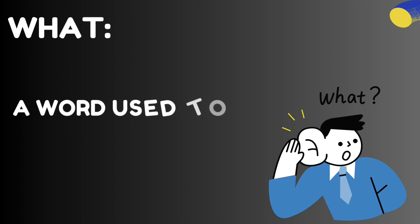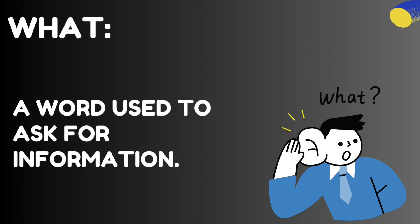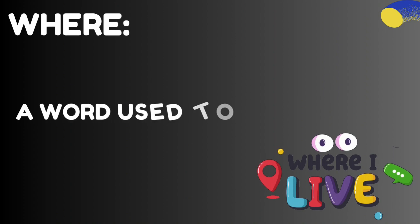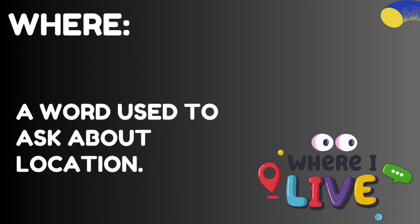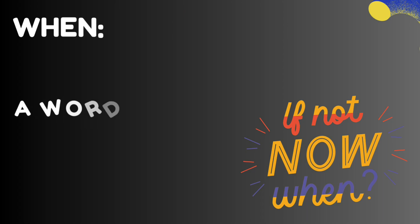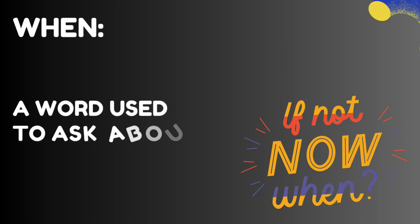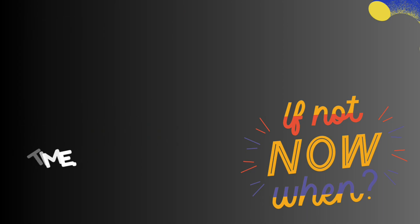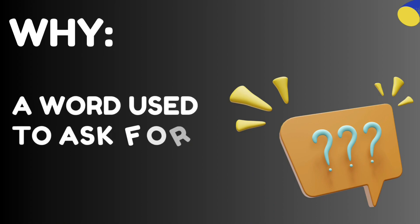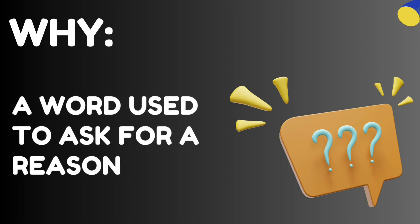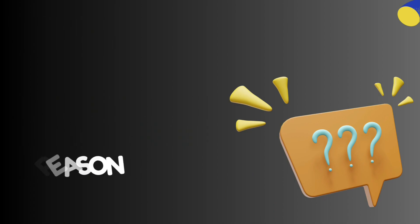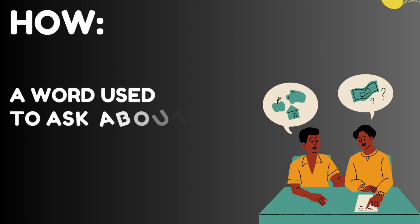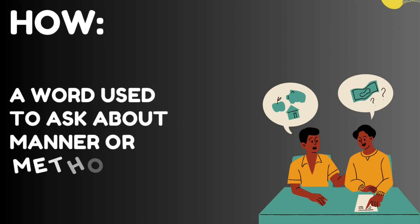What — a word used to ask for information. Where — a word used to ask about location. When — a word used to ask about time. Why — a word used to ask for a reason. How — a word used to ask about manner or method.